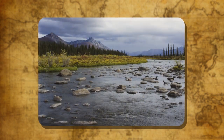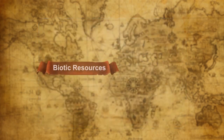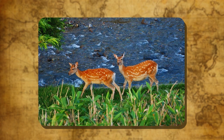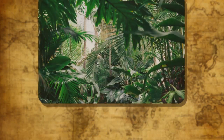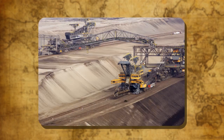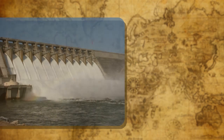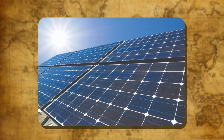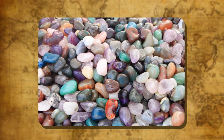Based on origin, resources may be categorized as biotic and abiotic. Biotic resources are those which contain life — all living things are biotic resources, for example, plants, animals, and human beings. Abiotic resources are non-living things that do not contain life — water energy, solar energy, rocks, minerals, etc. are examples of abiotic resources.